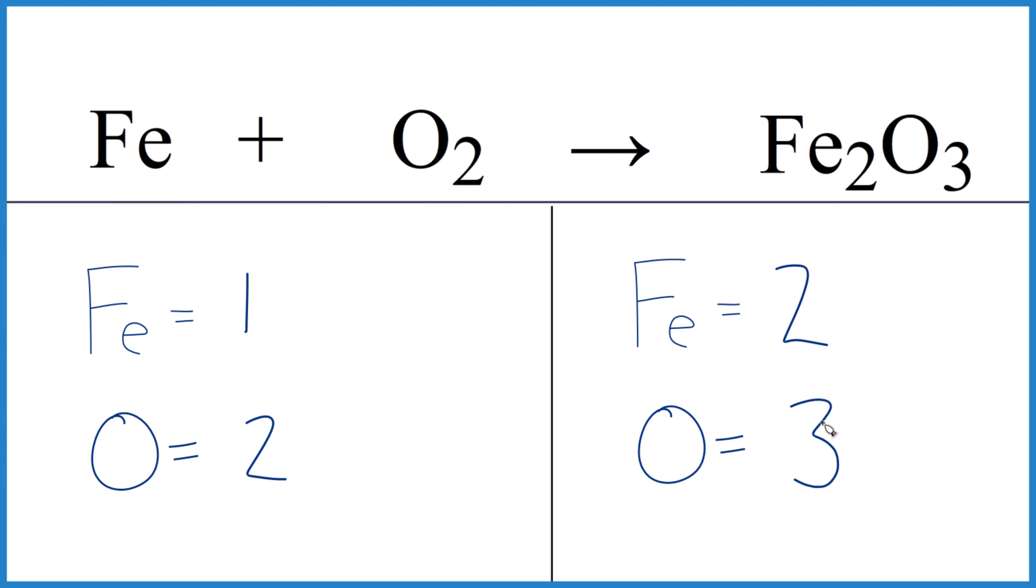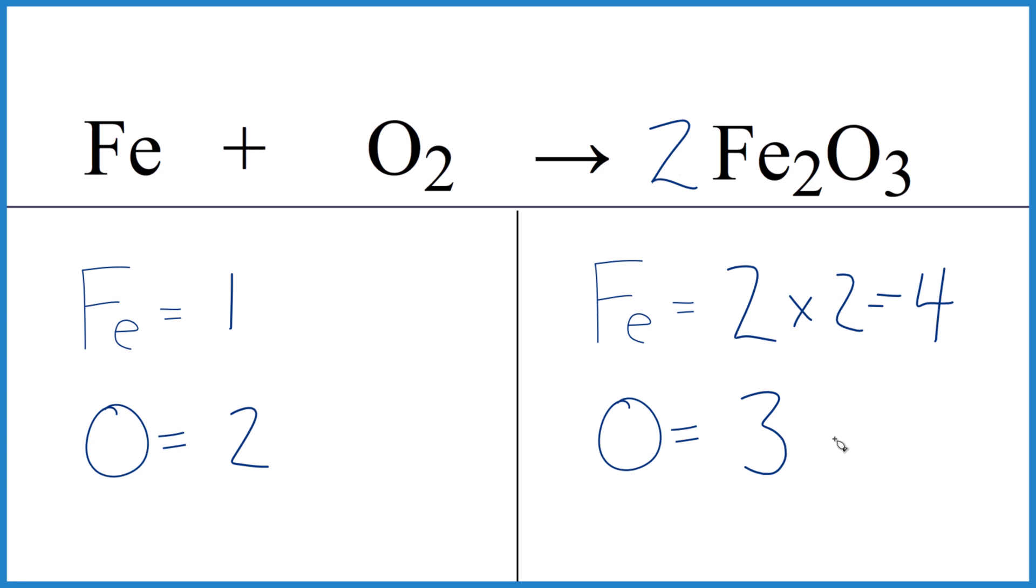The problem is I have three oxygen atoms, so what I want to do is multiply everything here by two. This two, it goes to everything. So two times two, that equals four, and then two times three, right there, that equals six.